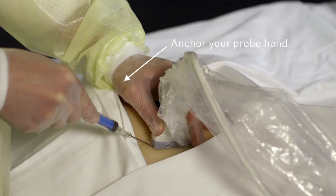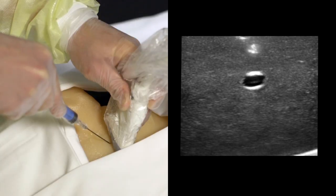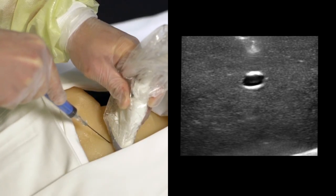Always anchor your probe hand on the patient to make sure your probe doesn't wander off target. This gives you tactile feedback that you are not moving the needle in relation to the patient. If the needle is not easily visualized, bounce the needle a bit as this movement will be easily seen on the ultrasound screen.